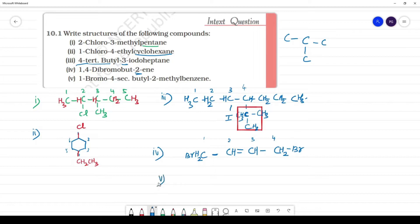This is 1,4-dibromo-butylene. Next, last, fifth: 1-bromo-4-secondary-butyl-2-methyl-benzene.